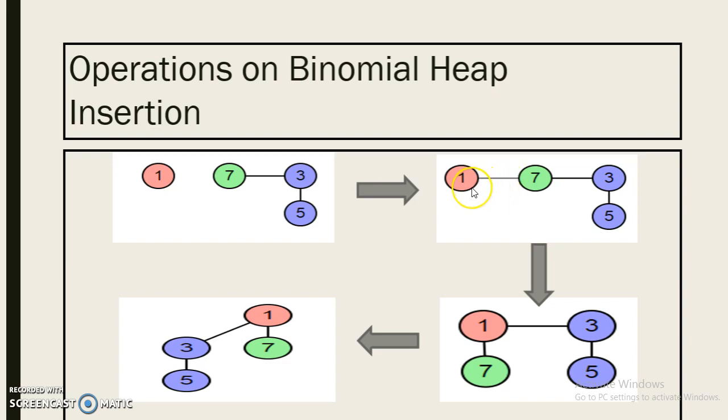As we can see here, 1 and 7 both are order 0, so we will combine them. 1 is the minimum value among 1 and 7, so 1 will become root and 7 will become a child of it.